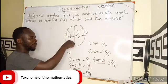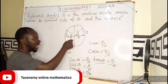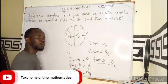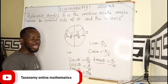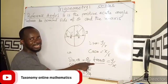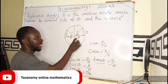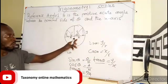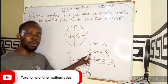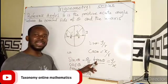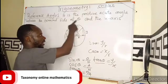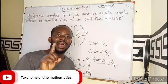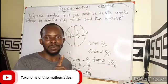Moving to the 3rd quadrant, both x and y are negative. You will see that sin is negative, cos is negative, and only tan is positive. Then in the 4th quadrant, using the same approach, sin will be negative, cos will be positive, and tan will be negative.